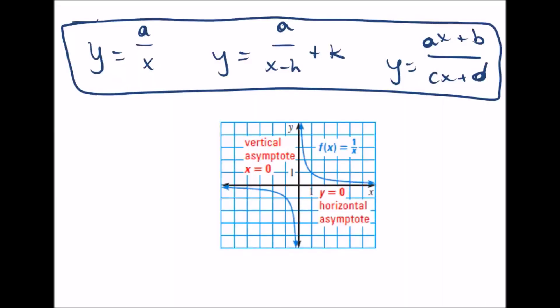Today we're going to talk about three forms of simple rational functions. Here are the three forms written on the top. The first one is obviously the easiest, medium, and then most difficult.